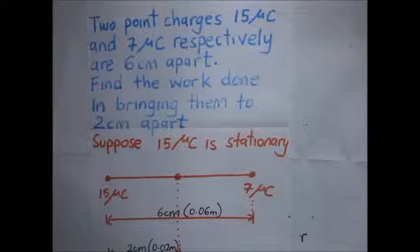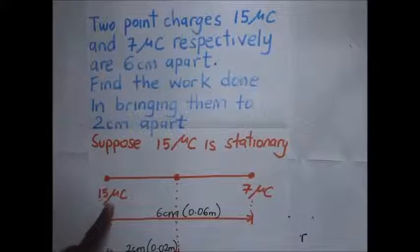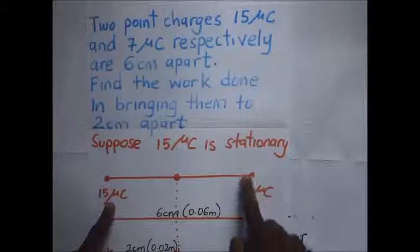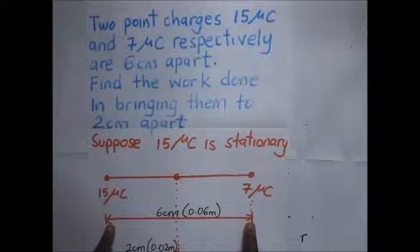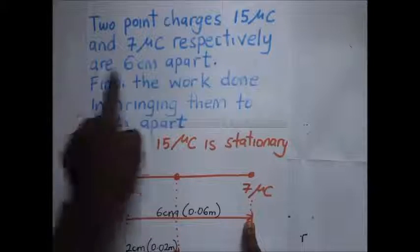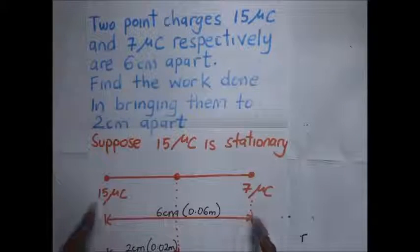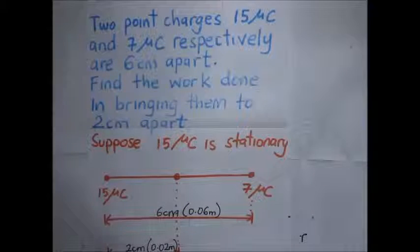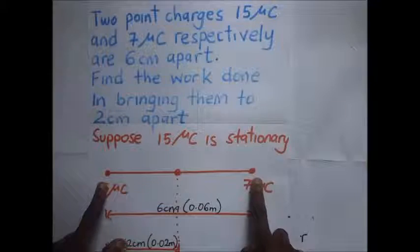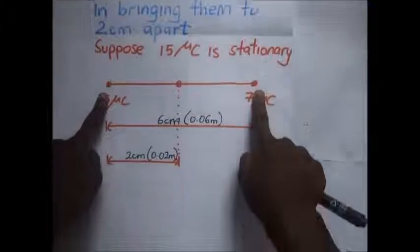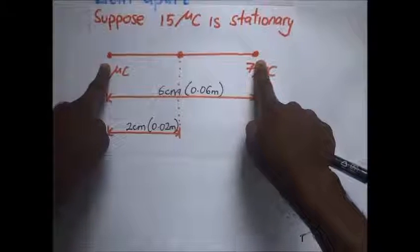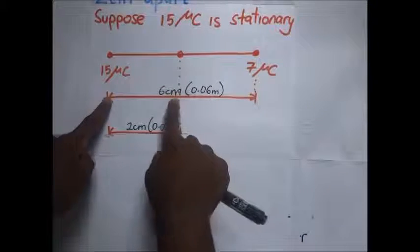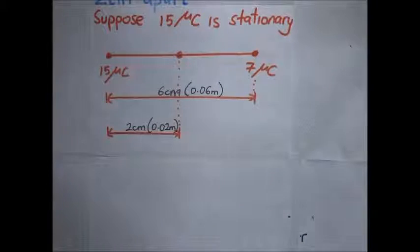We have a question here: two point charges — 15 microcoulombs and 7 microcoulombs — are six centimeters apart. Find the work done in bringing them two centimeters apart. So these two are initially six centimeters apart and we want to find how much work we need to do to bring them two centimeters apart.